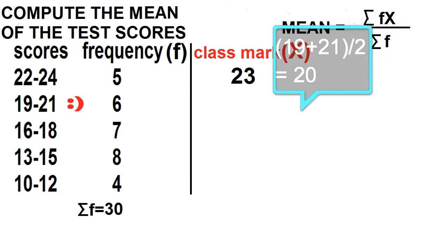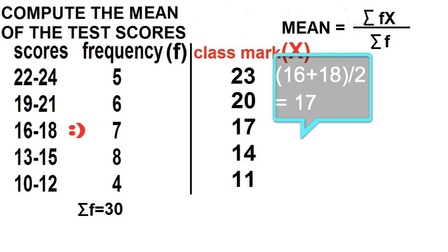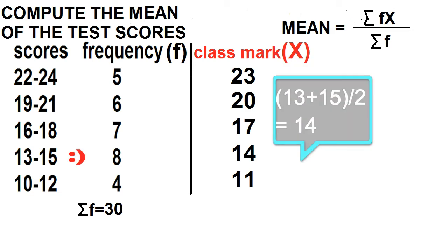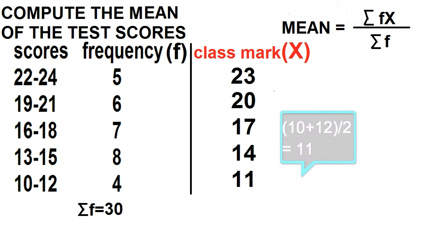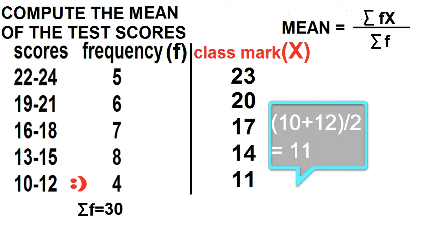19 plus 21 is equal to 40 divided by 2 is 20. 16 plus 18 equals 34 divided by 2 is 17. 13 plus 15 is 28 divided by 2 is 14. 10 plus 12 is 22 divided by 2 is 11.